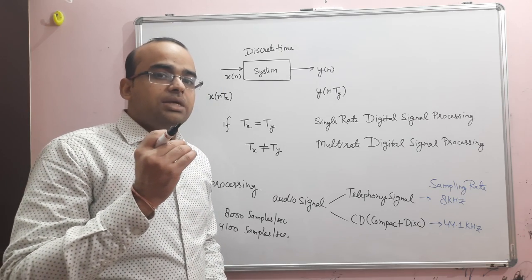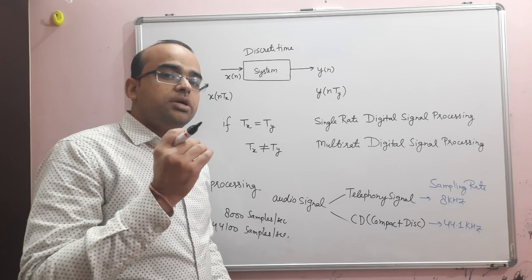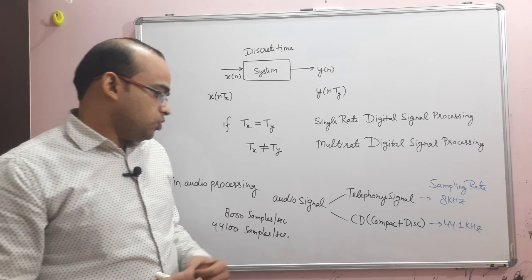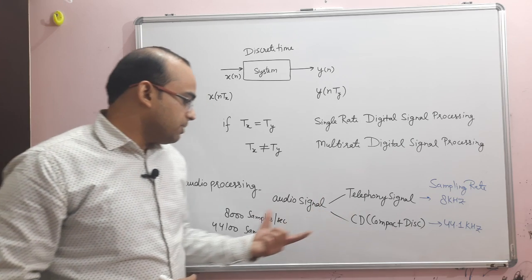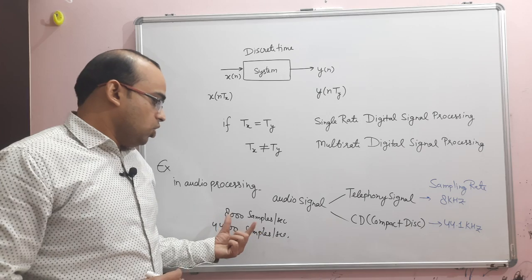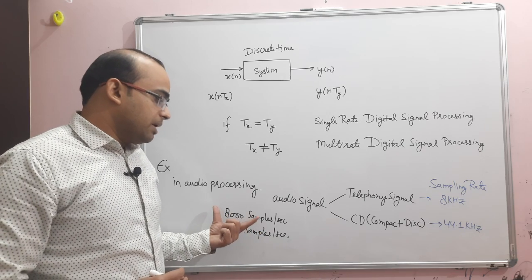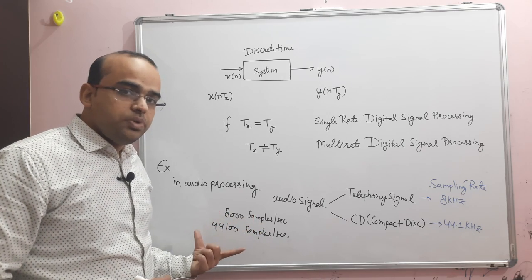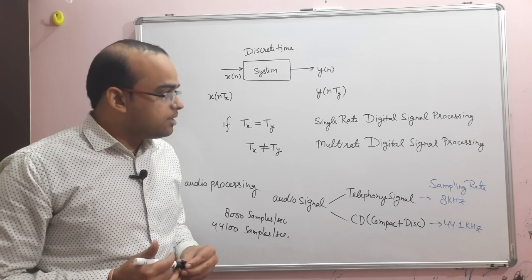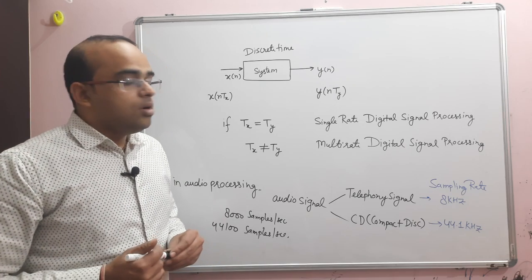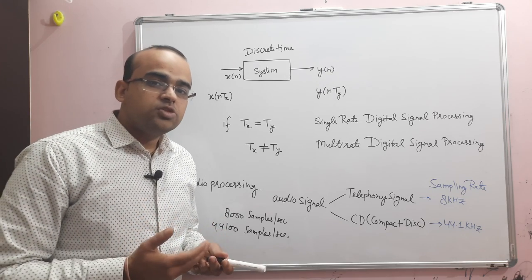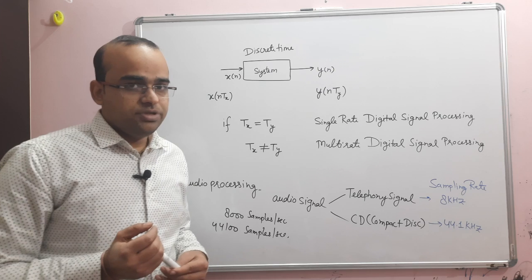We need to decrease the sampling rate from 44.1 kHz to 8 kHz. So we need sampling rate conversion — sometimes we need to increase the sampling rate and sometimes we need to decrease it. Sampling rate means how many samples per second we are taking, and we increase or decrease them as per the requirement.